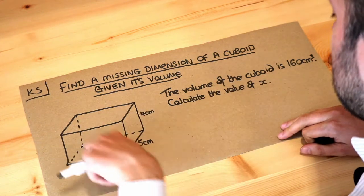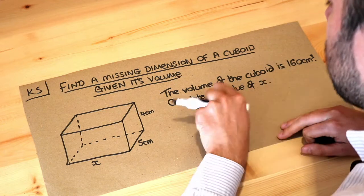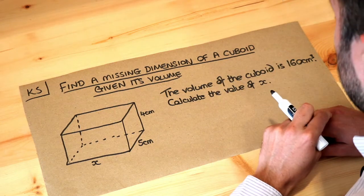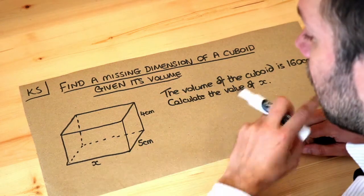So we've got this cuboid here and we're told that the volume is 160 centimeters cubed and we need to find this length x.